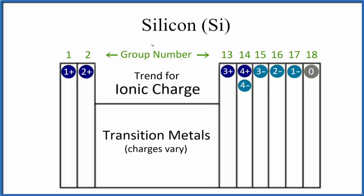In this video, we'll talk about the charge on silicon, Si, and we're talking about ionic charge. We're not talking about oxidation number, which is something different. What we are talking about is when Si forms bonds with another element — an ionic bond — how many electrons would it gain or lose?